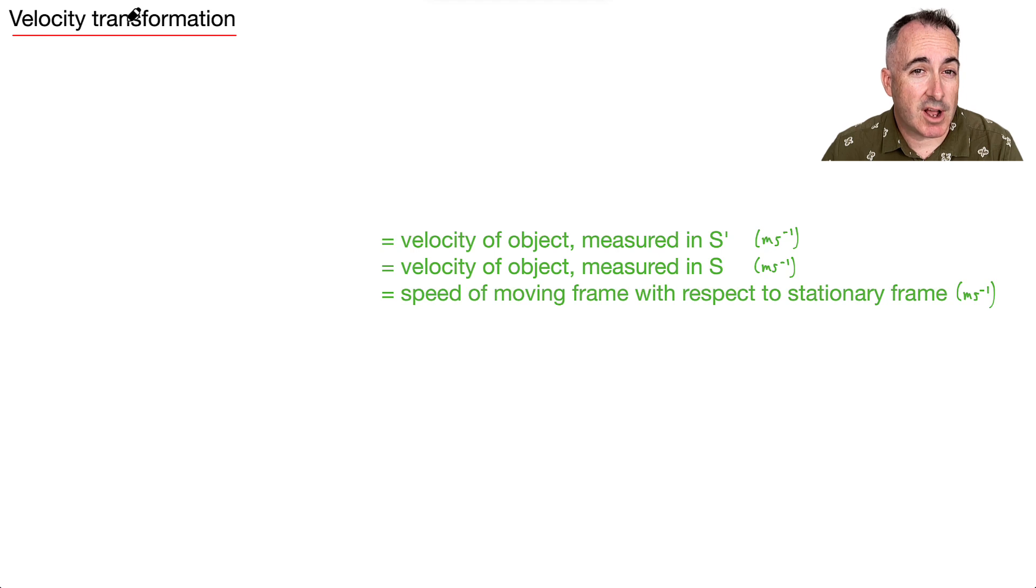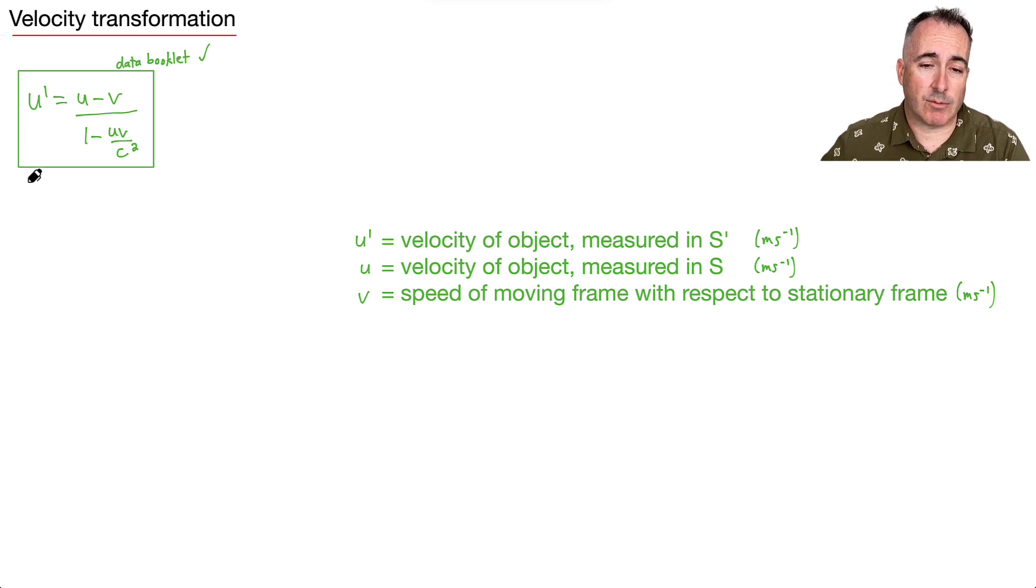So we've also got a transformation for velocity. And it goes like this. So it goes U primed equals U minus V over one minus U V over C squared. And again, that's in your data booklet. So yay. So what does everything mean here? Well, let's see. Velocity of the object measured in S primed, that must then be U primed. The velocity of the object measured in S, that's just going to be U. That's how fast you think it's going if you're standing still respect to this train or whatever. And the speed of the moving frame is a V. So do you notice we're trying to be consistent here with these different variables? Although, again, these equations look kind of wacky. As long as you keep your variables in check, you're going to be just fine.